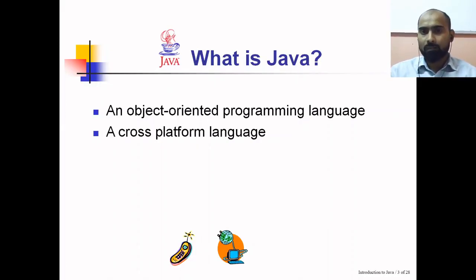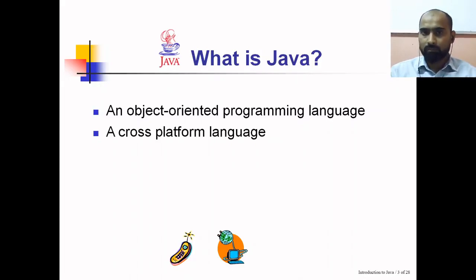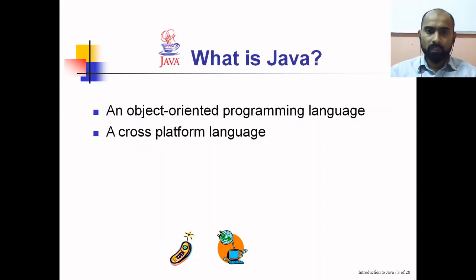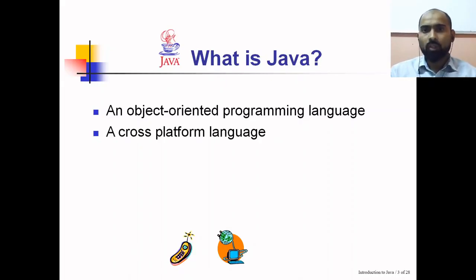It can be executed on a Linux platform or a Macintosh platform. Platform may refer to a software platform or a hardware platform. If we take the example of C programming language, which is not platform-independent, a program written on a Windows platform in C may not be directly executed on another platform unless we compile it on that particular platform. So programs written in C are not platform independent.